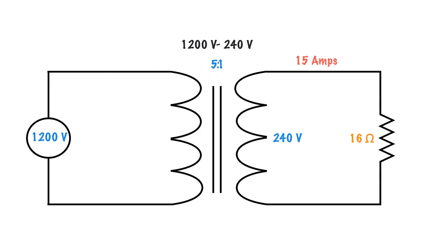So when we use this turns ratio we've got the higher current here. We're going to go 15 amps divided by 5 to get our primary current, which in this case works out to be 3 amps.